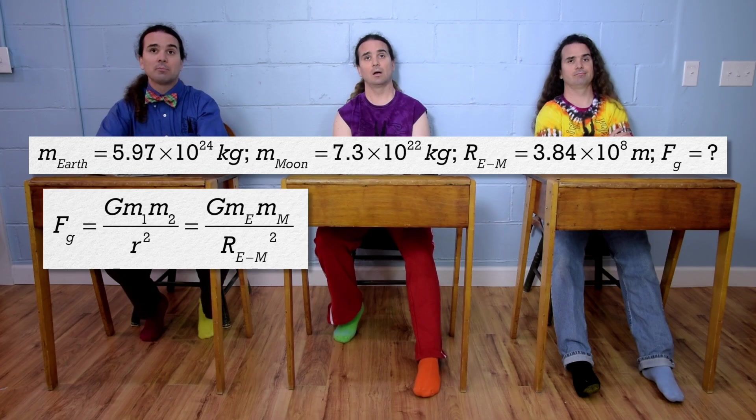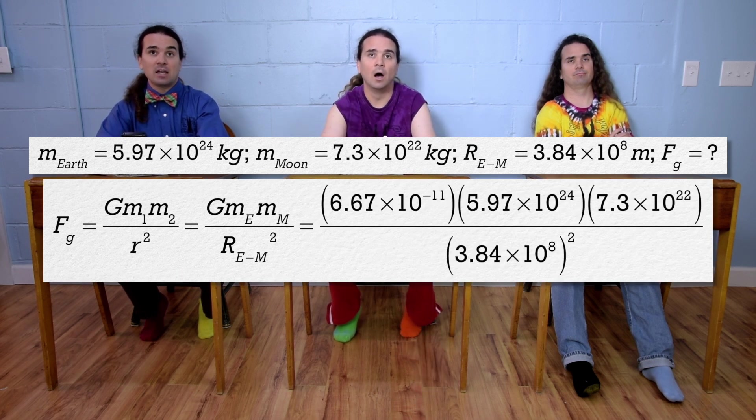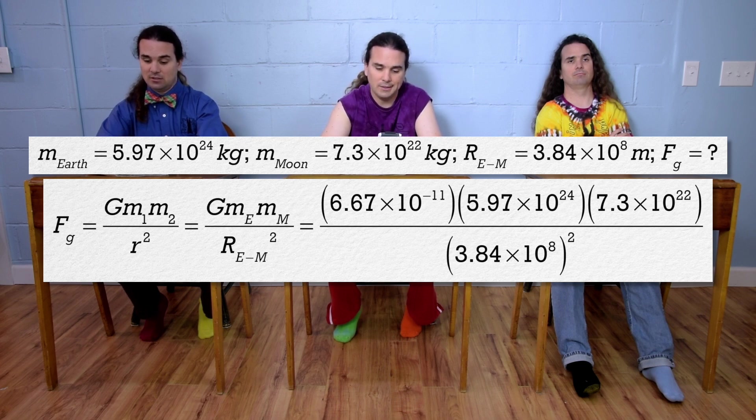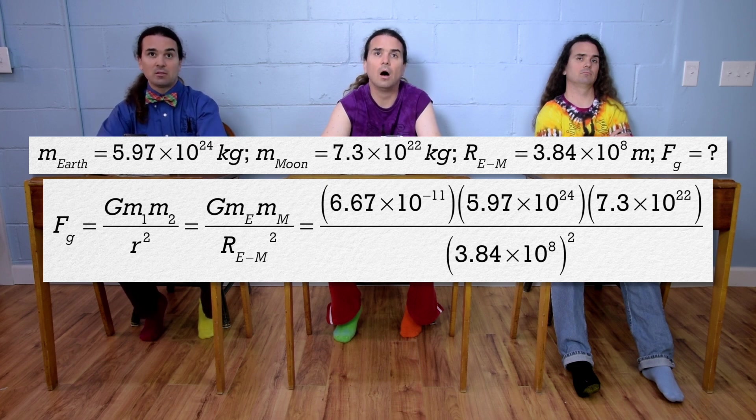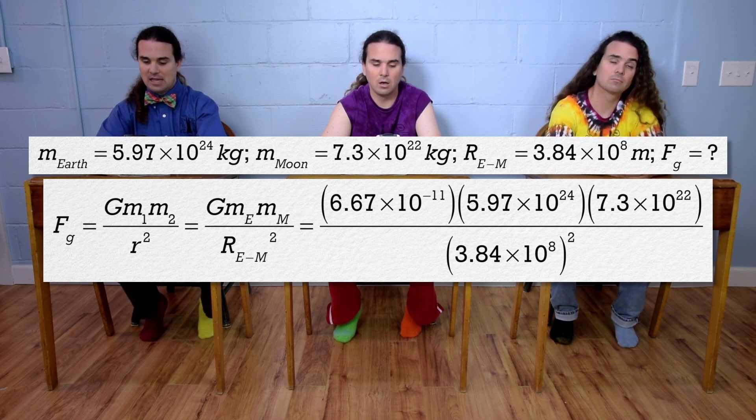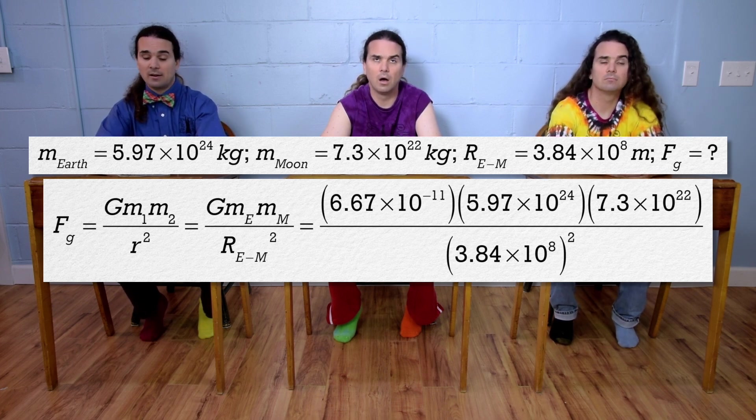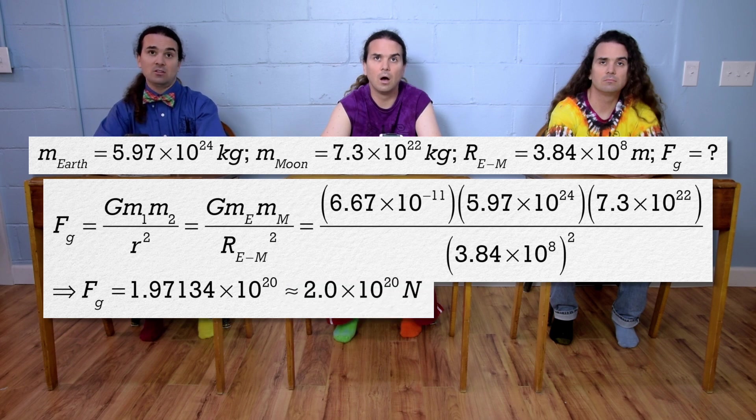Sure. Plugging in numbers gives us 6.67 times 10 to the negative 11 times 5.97 times 10 to the 24th times 7.3 times 10 to the 22nd, all divided by—oh, r is the mean distance between the Earth and the Moon, so divided by 3.84 times 10 to the 8th squared, and that works out to be 1.97134 times 10 to the 20th, or 2.0 times 10 to the 20th Newtons, with two significant digits.